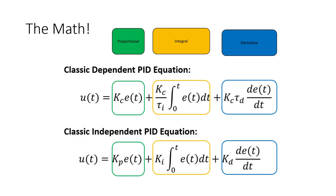There's some calculus involved in the PID math, but each component has its own carved-out area in the mathematical equation — proportional, integral, and derivative — and they're just added together. At any given point in time, one of those may be larger, smaller, or even negative, pulling everything back. The key thing is they're all added together at the end.